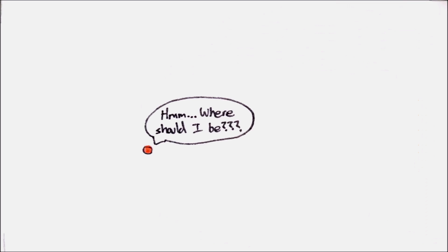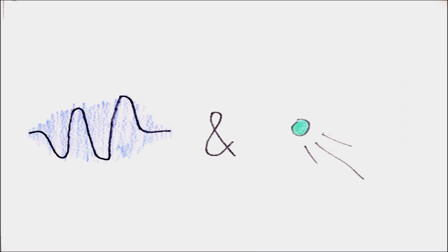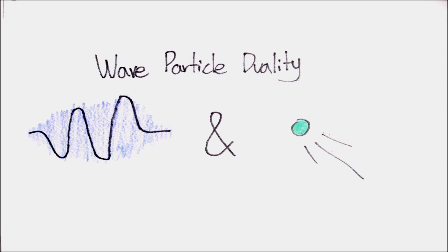To sum up, the electron chooses one position it wants to be from all the other possible states in the probability wave. This eventually led to a conclusion that matter behaves like particles and also like waves, hence creating the wave-particle duality, one of the first revolutionary ideas of quantum mechanics.